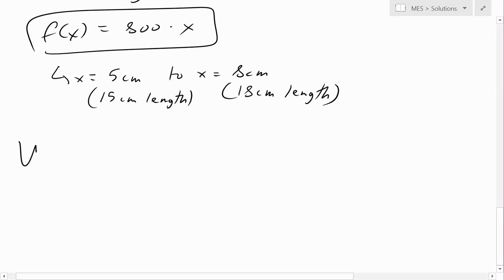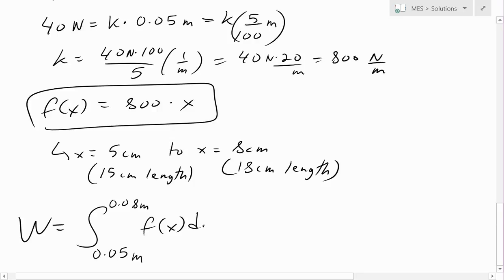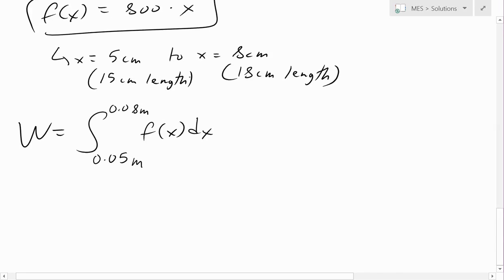We can use the integral now to solve for the amount of work. Work equals moving from 0.05 meters to 0.08 meters. This is our f(x), the force applied at every point, and the area under the force curve is our total work. Because it's changing, we need to do summation over every point using integrals, like I explained in my earlier video. So we have the integral from 0.05 to 0.08 of 800x dx.